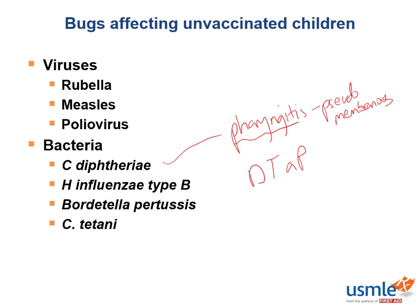What other pathogens are protected by the DTaP vaccine? It covers diphtheria, as we just said, but also Clostridium tetani and Bordetella pertussis. So it protects against tetanus and whooping cough.